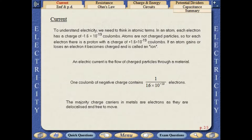Atoms are not charged particles, so for each electron, there is a proton with a charge of 1.6 times 10 to the minus 19 coulombs. If an atom gains or loses an electron, it becomes charged and is called an ion.